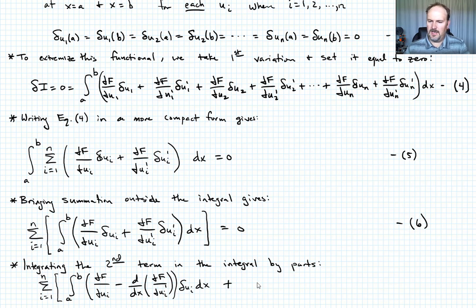And then I have a boundary term plus what will be the partial of f with respect to ui prime times delta ui evaluated from a to b, okay? All of that equals zero. Let's call that equation seven.